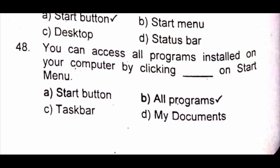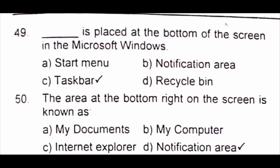Question 49: Dash is placed at the bottom of the screen in Microsoft Windows. The answer is C) taskbar. Question 50: The area at the bottom right of the screen is known as A) My Documents B) My Computer C) Internet Explorer D) notification area. The answer is D) notification area.